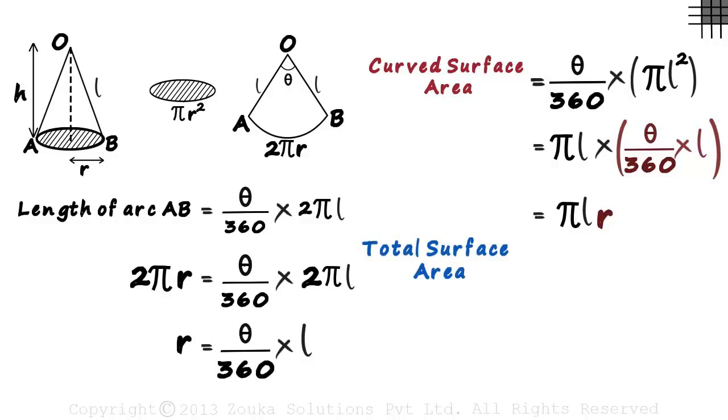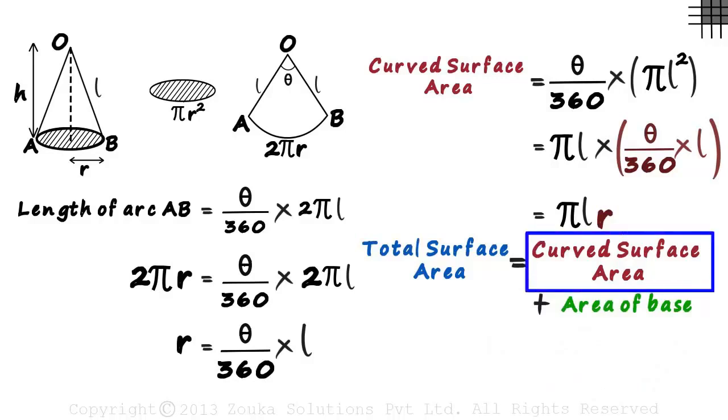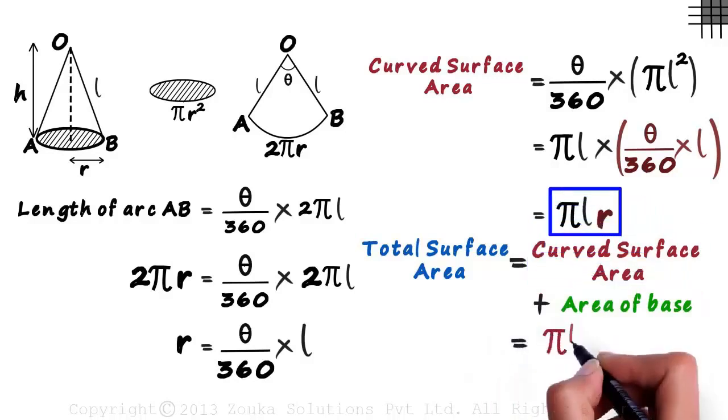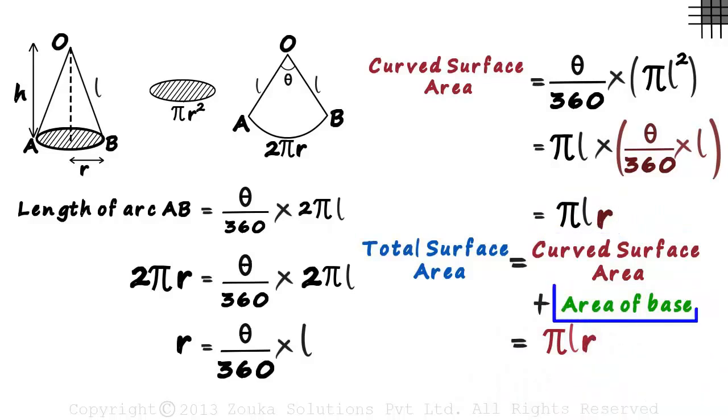The total surface area of the cone will be the curved surface area plus the area of the circular base. The curved surface area as we know is pi L R. And the area of the base is pi R squared. Both the terms have pi R as their common factor. Taking pi R common, we write the formula as pi R multiplied by L plus R. This is the formula for the total surface area of a right circular cone.